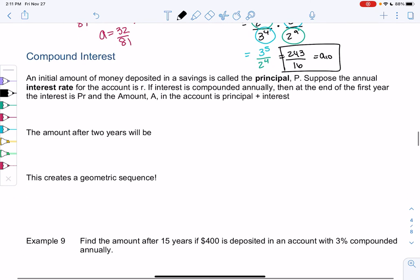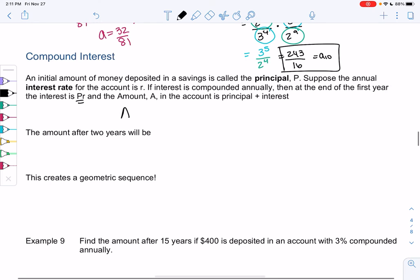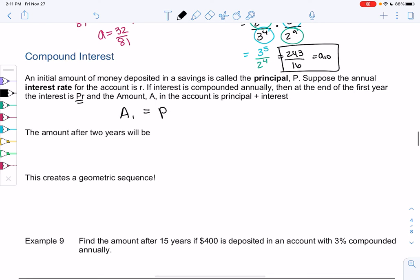Let's finish up with compound interest—that's also an example of a sequence. If we have an initial amount of money, we call that the principal, and we have an interest rate of r. If interest is compounded annually, then at the end of the first year, our interest would be P times r. The amount is just principal plus interest. So after one year, I'll call it A_1 for year one, it would be principal plus interest, which is P times r, or P times (1 + r).